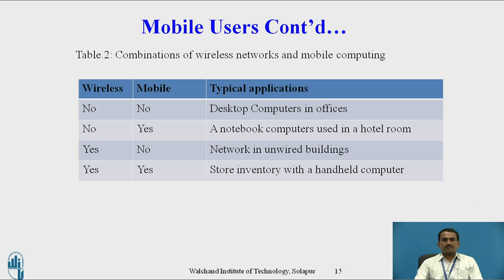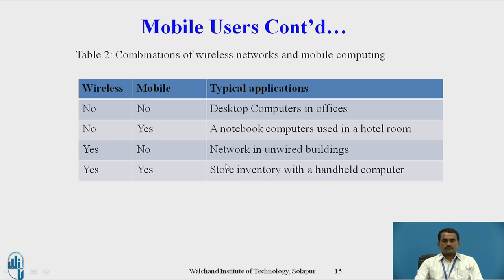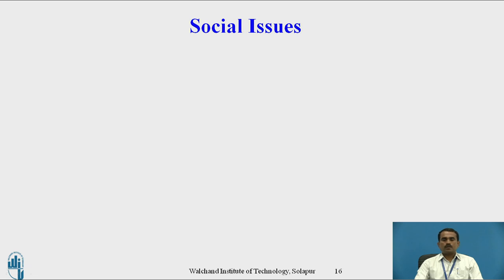The table shows the combination of wireless networks and mobile computing. Wireless: No, Mobile: No — desktop computers in an office. Wireless: No, Mobile: Yes — example: notebook computers used in a hotel room. Wireless: Yes, Mobile: No — application: a network in an unwired building. Wireless: Yes, Mobile: Yes — example: tracking inventory with handheld computers. This covers the combination of wireless and mobile computing.